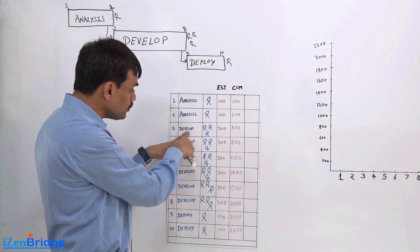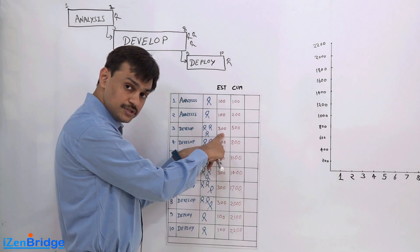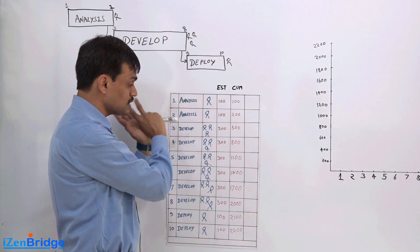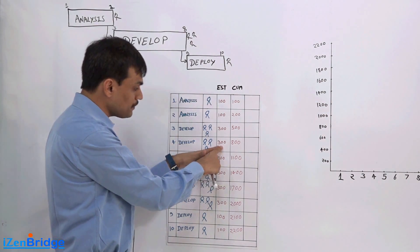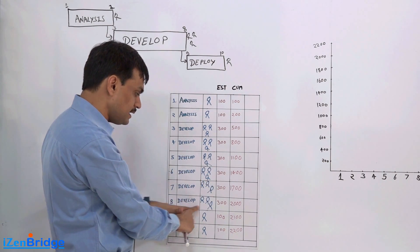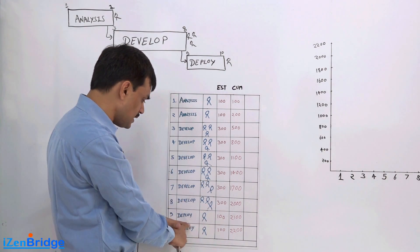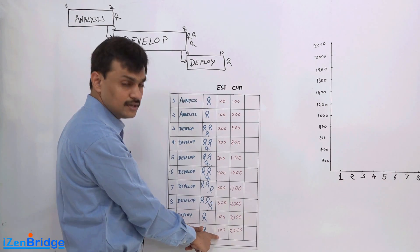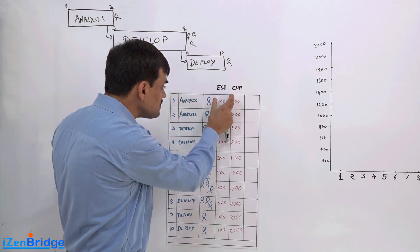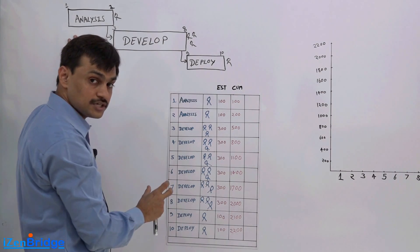On day 2 also I'm doing analysis, one person working on it and I'm putting $100 to this. On day 3 I'm doing development, I'm putting $300 to it because there are 3 people. Day 4 development $300 and till day 8 we are spending $300 and in deployment we are spending $100 and $100. This is like an estimation per day for this particular project.